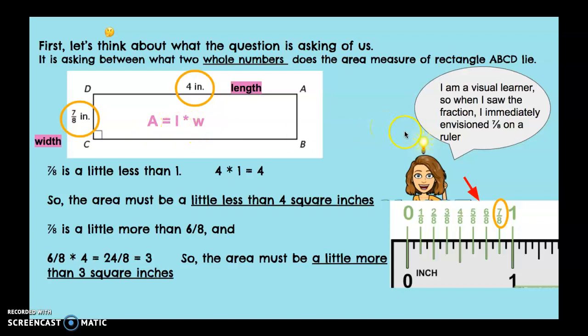I'm a visual learner, so the first thing I noticed was when I saw the fraction 7/8 of an inch, instead of getting nervous about it, I immediately envisioned 7/8 on a ruler, and that tells me that 7/8 is a little bit less than 1. So 4 times 1 equals 4, so the area must be a little bit less than 4 square inches.